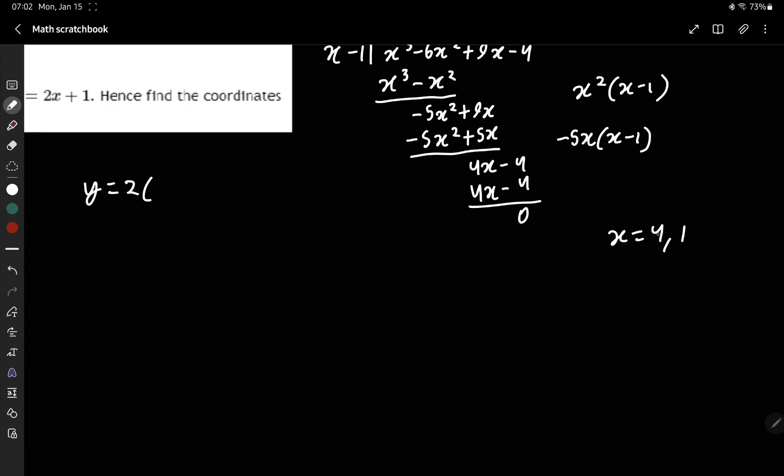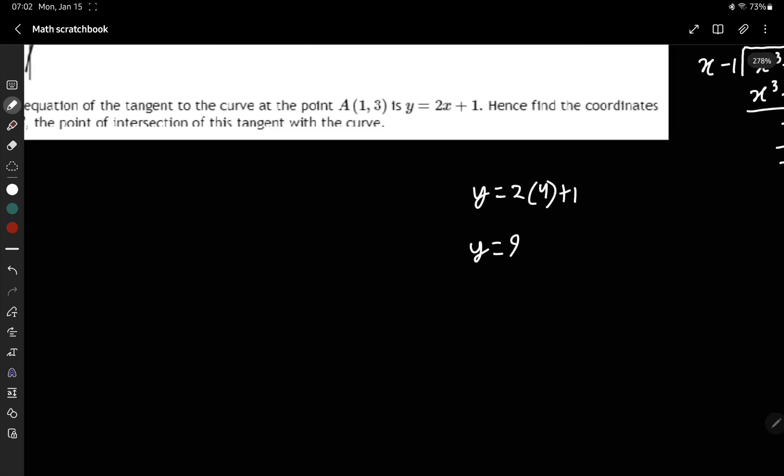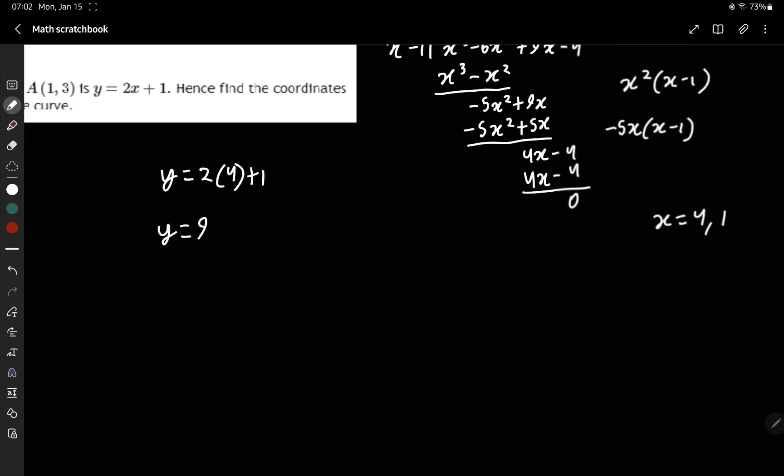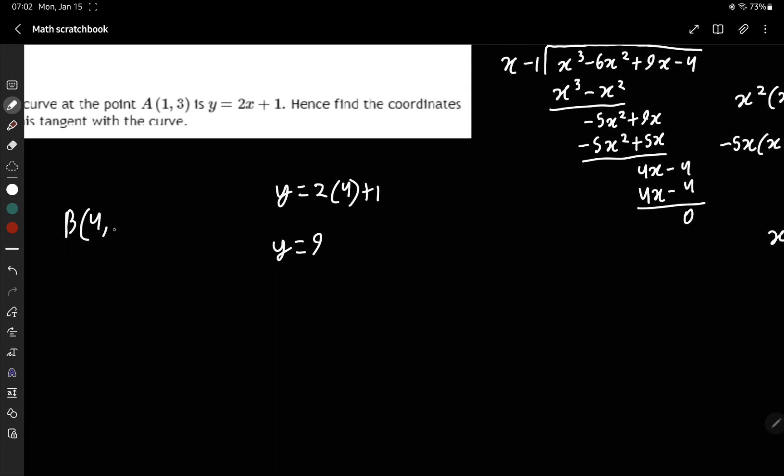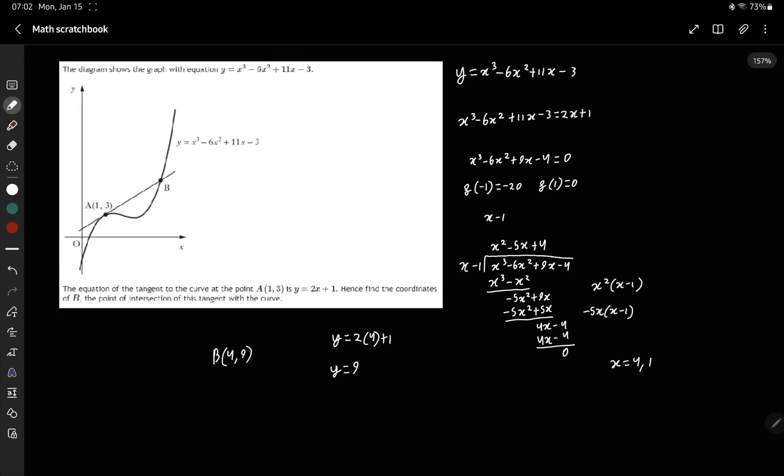So you do y equals 2 times 4 plus 1. The answer is 4, 9, the x and y coordinates. And that's it.